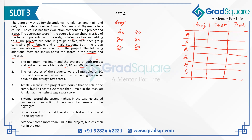For the test, we can't apply the same pairing logic. Moving to the second statement: test scores are all multiples of 10, with minimum 40, maximum 80, and average 60. Four scores are distinct and the remaining two equal the average of 60. The only multiples of 10 between 40 and 80 that fit are: 40, 50, 60, 60, 70, 80.